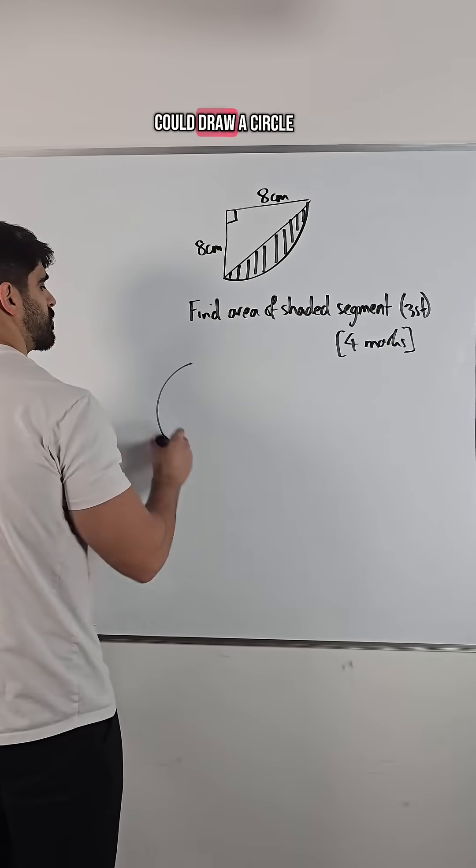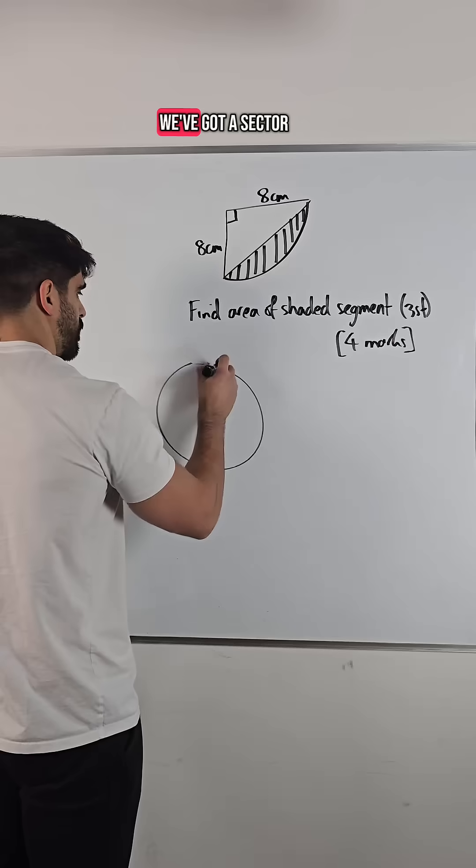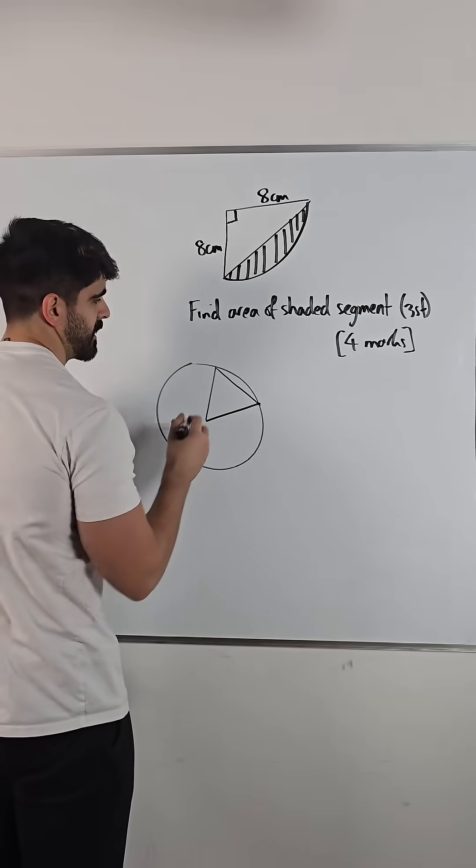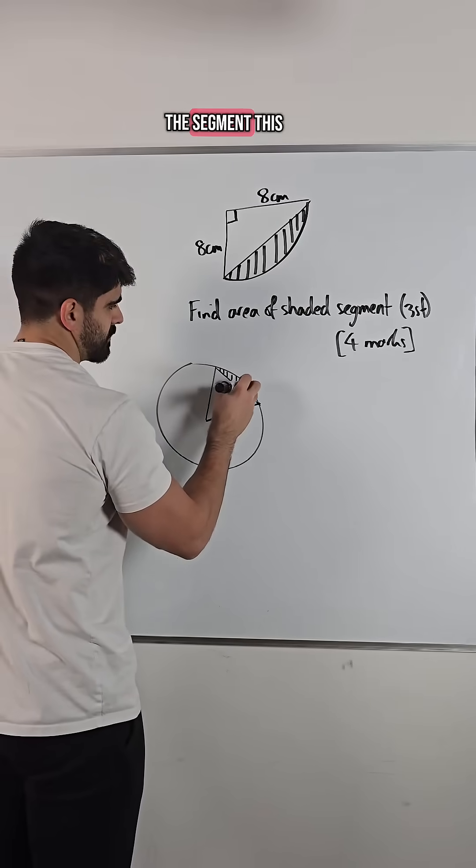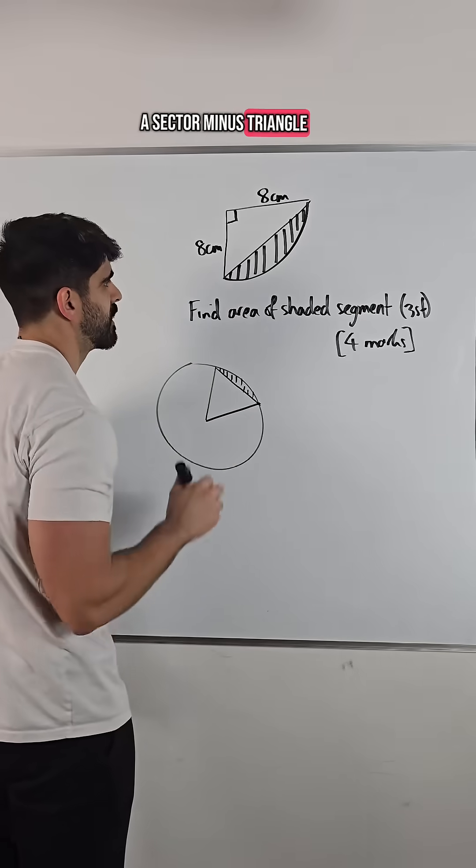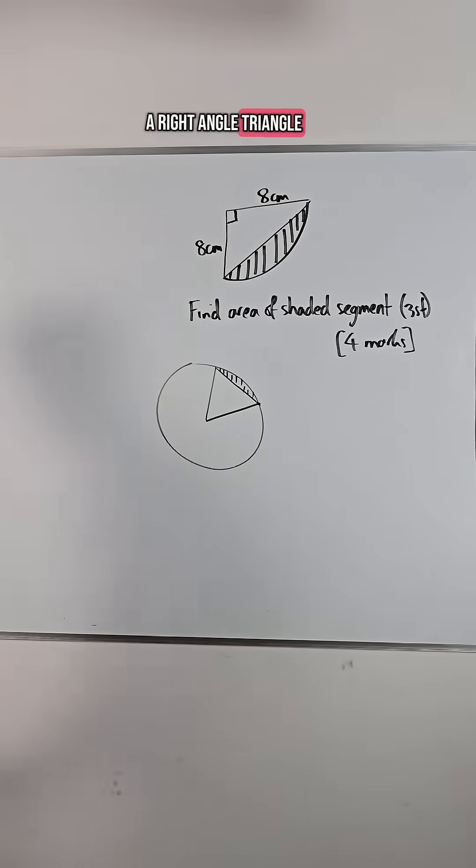So here I could draw a circle. Here we've got a sector. If you connect with a chord, the segment, this bit here, is a sector minus triangle. And this triangle is actually much simpler because it's a right-angled triangle.